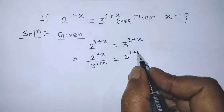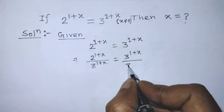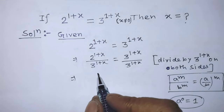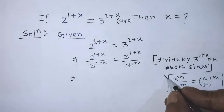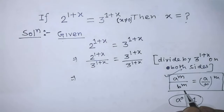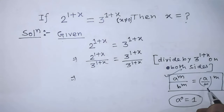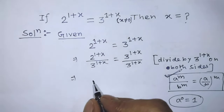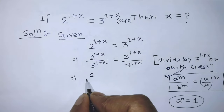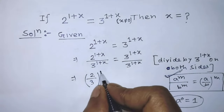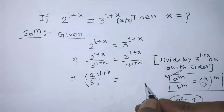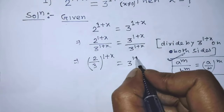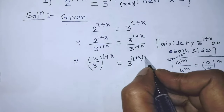To simplify the left hand side of this equation, we have to apply this formula: a to the power m over b to the power m is equal to a over b whole to the power m. According to this formula, we can write on the left hand side 2 over 3 whole to the power 1 plus x, is equal to 3 to the power 1 plus x minus 1 plus x.